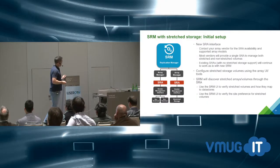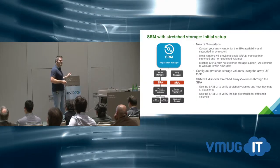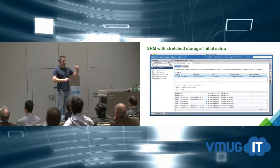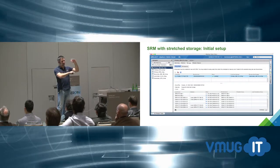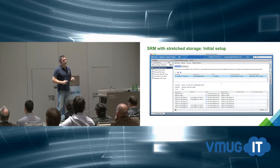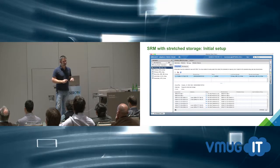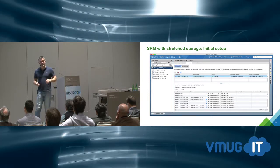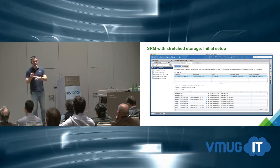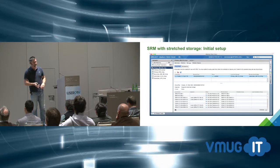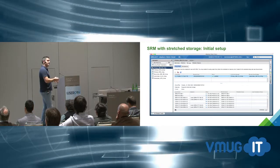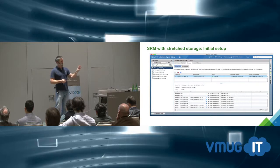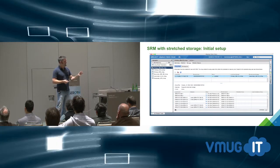You download the SRA, install it into your SRM server, and you're done. It then detects the storage type, detects that it's stretched, and determines that if both sites are up it can vMotion between them. The setup doesn't look any different to anything you've seen before — all your storage is consolidated into the array management pane where you can see replicated devices: synchronous, asynchronous, and stretched, all in a single list.